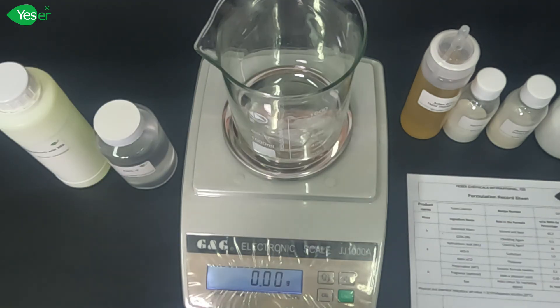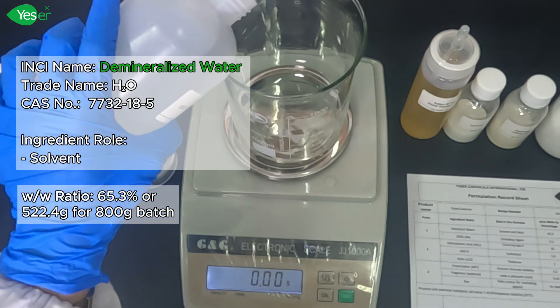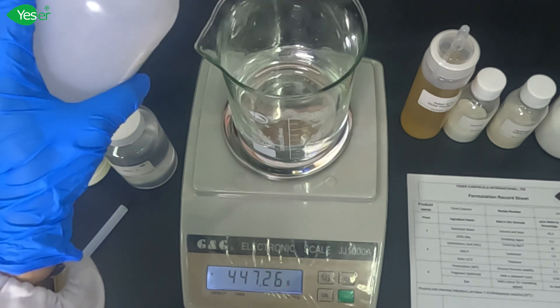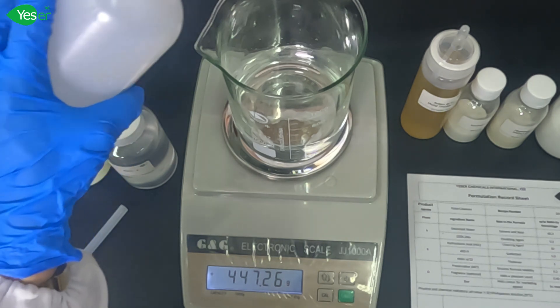First, let's add our deionized water. Weigh 522.4 grams of deionized water in our formula. We will make an 800 gram batch for this formula, and we will divide it into 4 for our 4 different thickeners.